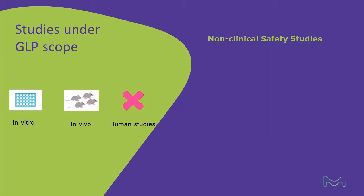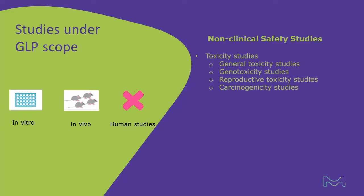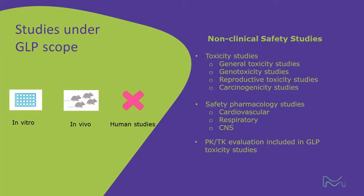Let's have a detailed look at the first step to identify possible safety concerns: the non-clinical safety studies. We can decide between three types of evaluations. Toxicity studies include general toxicity, genotoxicity, reproductive toxicity, and carcinogenicity studies. Safety pharmacology studies include cardiovascular, respiratory, and CNS evaluations, as well as pharmacokinetics and toxicokinetics included in GLP toxicity studies.